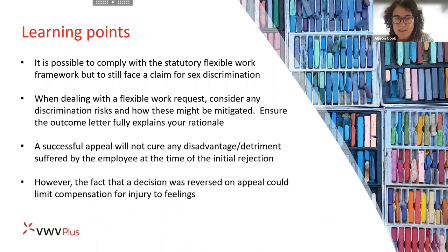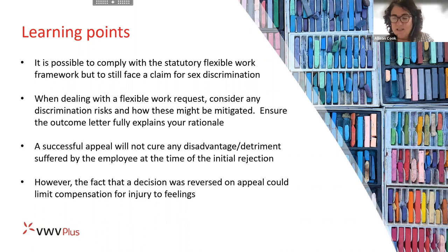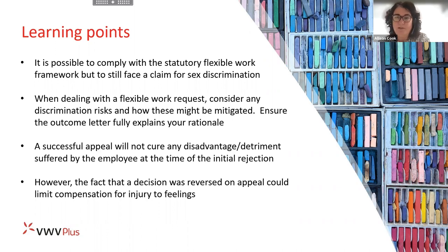The learning points: it is possible to comply with the statutory flexible working framework but still face a claim for sex discrimination. It's really important to consider discrimination risk and how it can be mitigated, and to fully explain your rationale — almost setting yourself a paper trail should decisions be challenged. A reminder that even where an employee successfully appeals, it may not cure any disadvantage suffered at the time of initial rejection. The fact that a decision was reversed on appeal could limit injury-to-feelings type compensation.